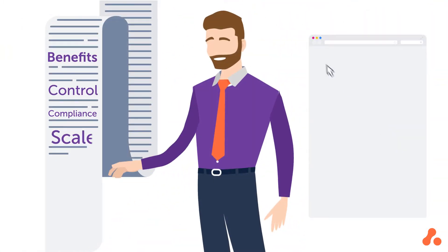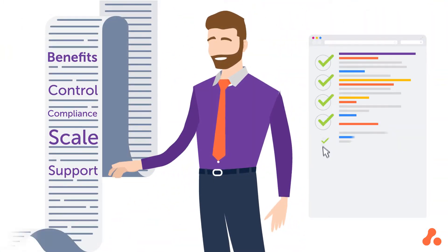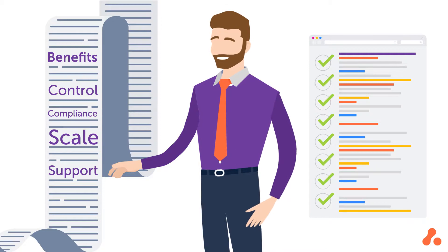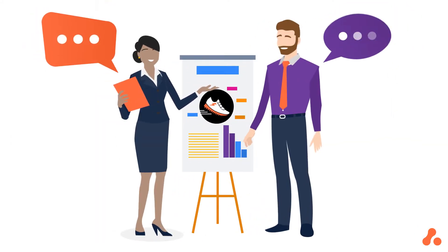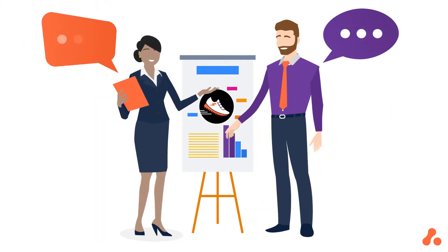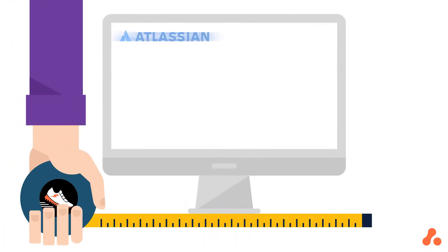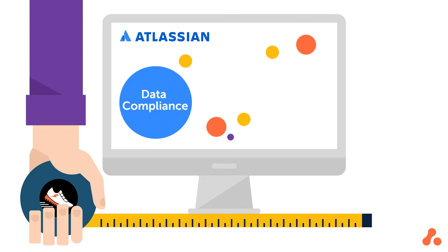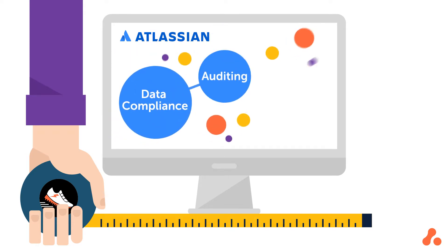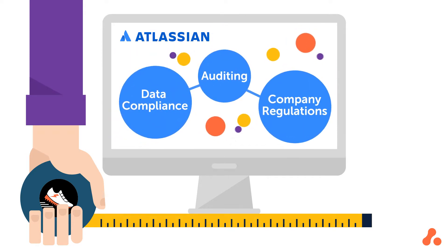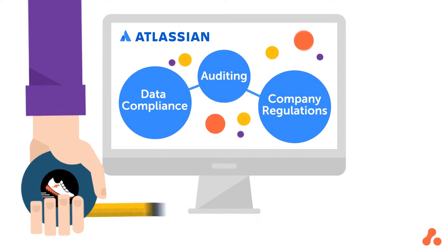ScriptRunner has a list as long as your arm of brilliant automation benefits that help you get the most out of Bitbucket, but we'll tell you about a few of the best ones right now. Firstly, it allows you to customize Atlassian to your unique needs by putting in place standards for data compliance, auditing and company regulations that reflect your organizational objectives.